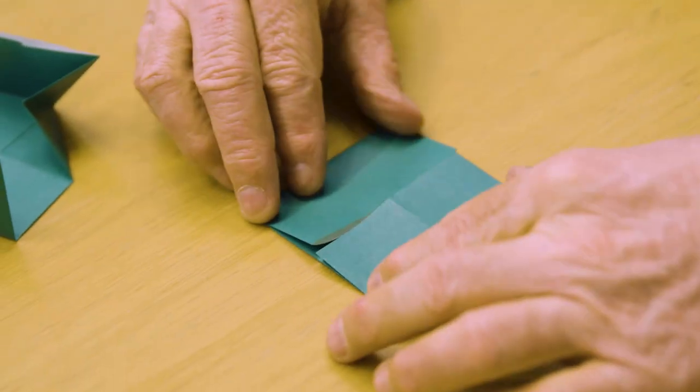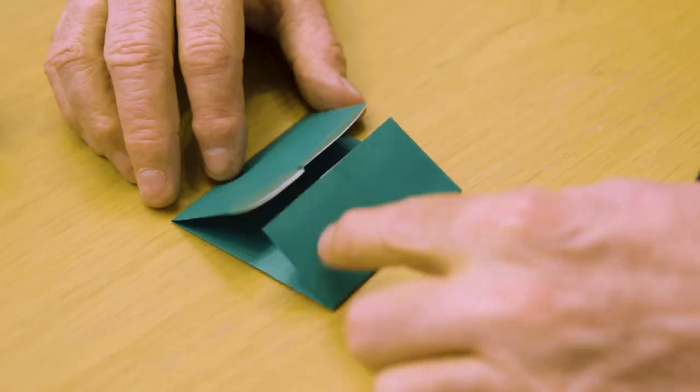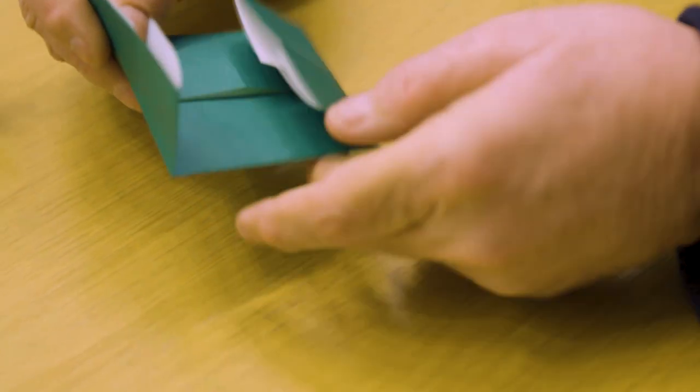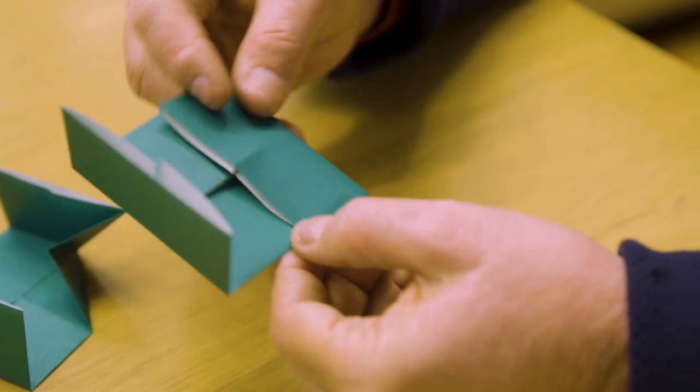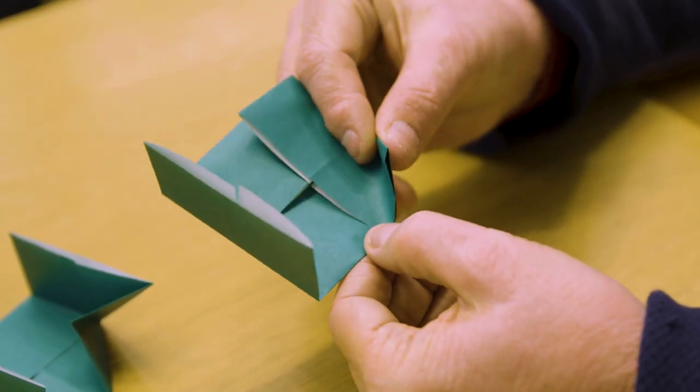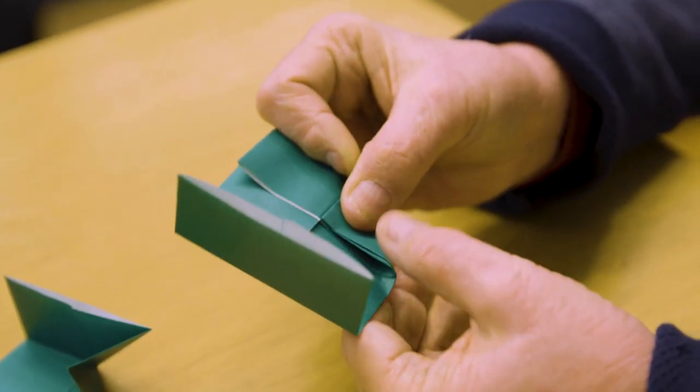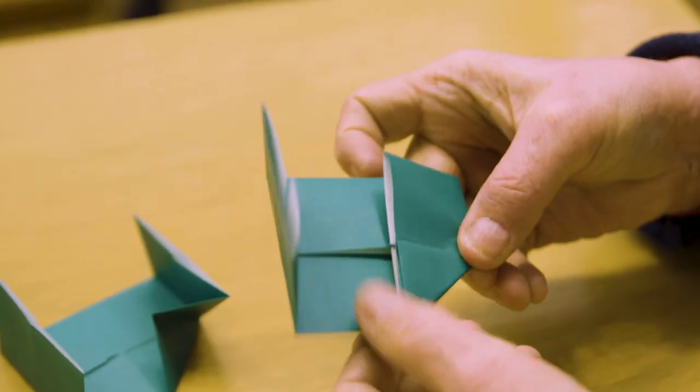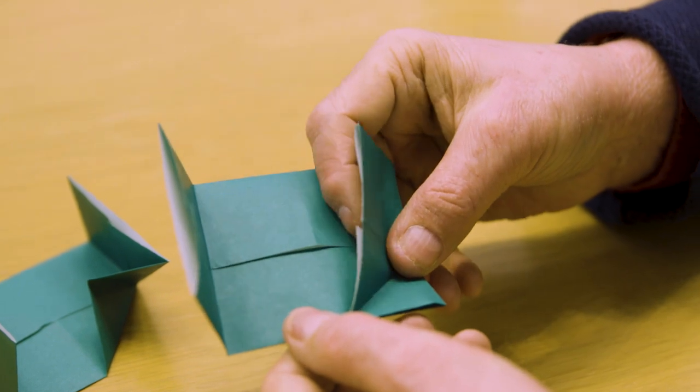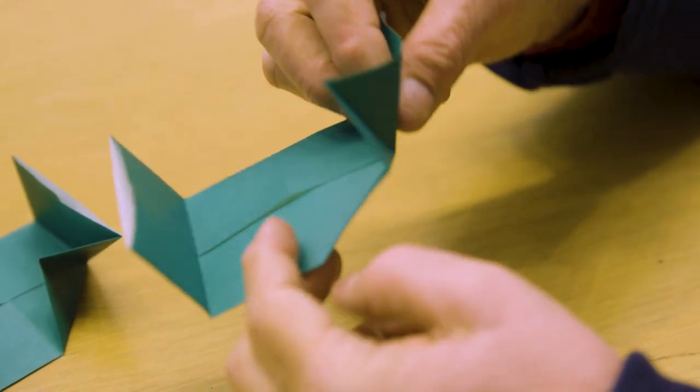So you first of all make the unit as you make it ordinarily and then you choose a corner. It doesn't really matter which one. Just one corner. Fold over the tab and then fold the corner into the middle like that. So you make a triangle and a good strong fold. Then open the triangle and open the tab and turn it over.